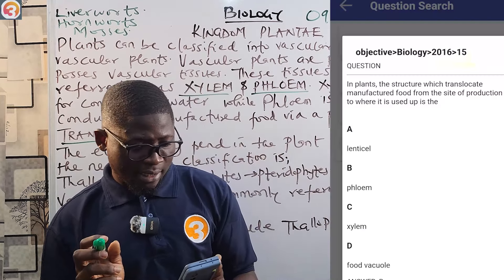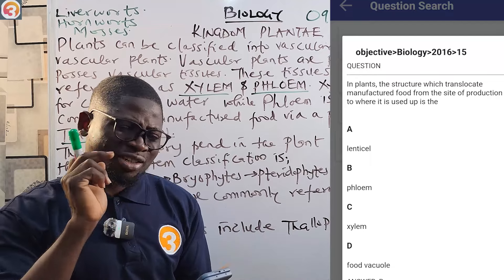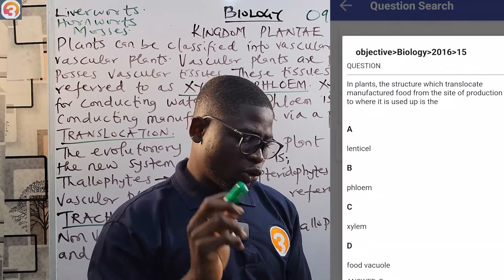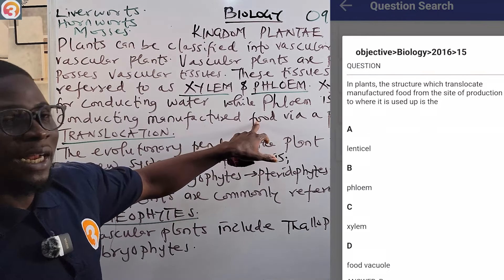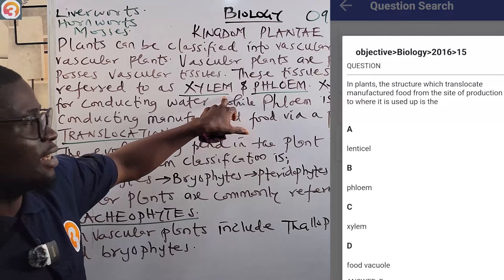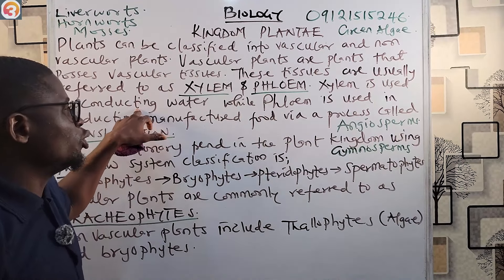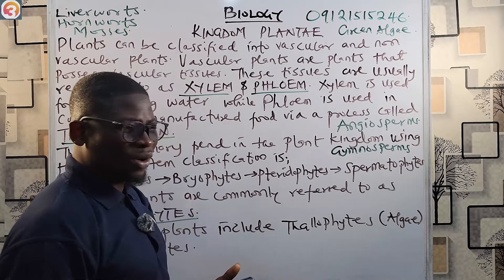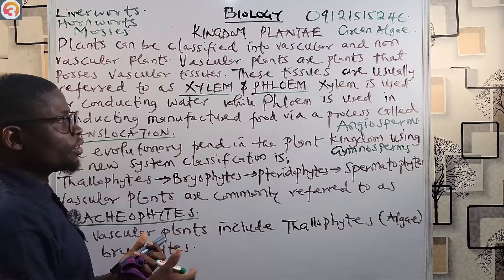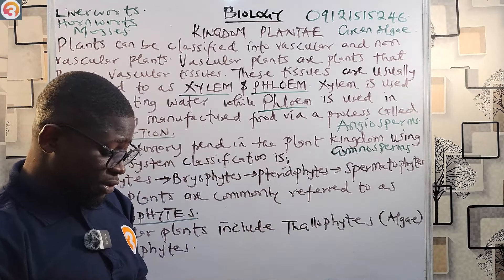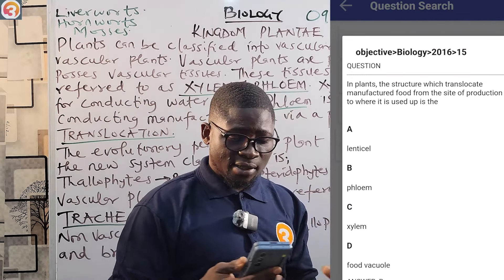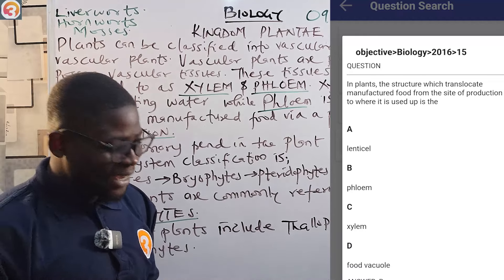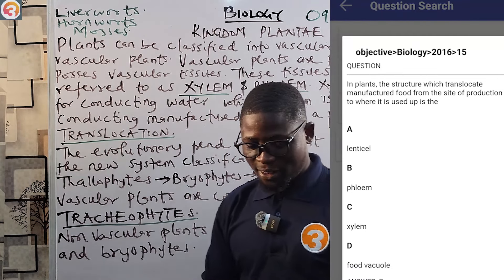Here's a 2016 JAMB question, number 15: 'In plants, the structure which translocates manufactured food from the site of production to where it is used is...' Going back to our xylem and phloem — the xylem is for transporting water, while the phloem is for conducting manufactured food through a process called translocation. The correct answer is phloem. The options were: A — lenticels, B — phloem, C — xylem, D — food vacuole. The answer is B — phloem.